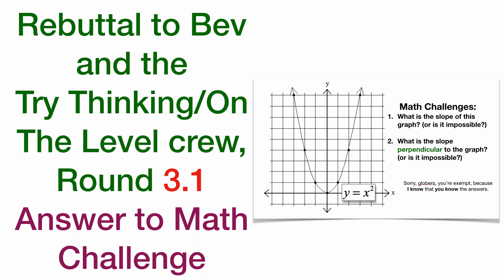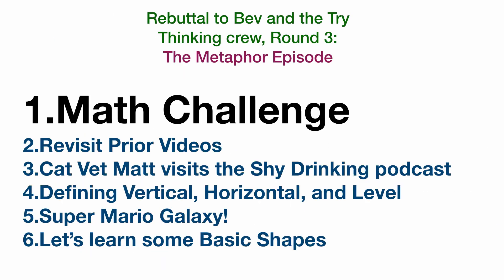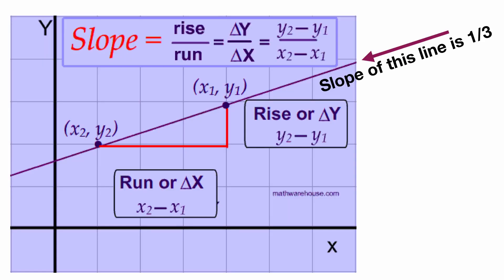Rebuttal to Bev and the Try Thinking on the Level crew, round 3.1, answer to the math challenge. So this is just going to cover the math challenge, specifically the answer to the math challenge. And I started by reviewing slope, which is rise over run. And I identified this slope as one-third, and Bev had something to say about that.